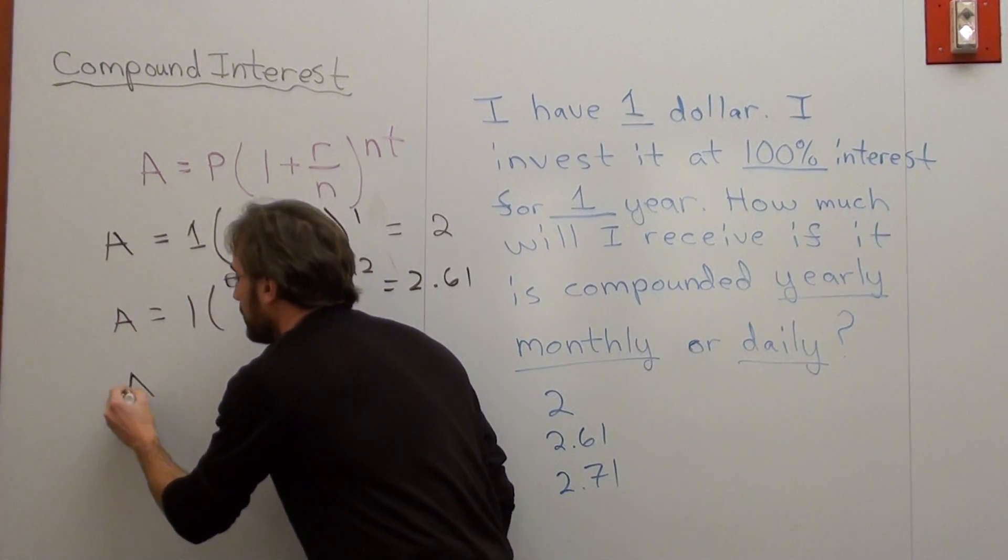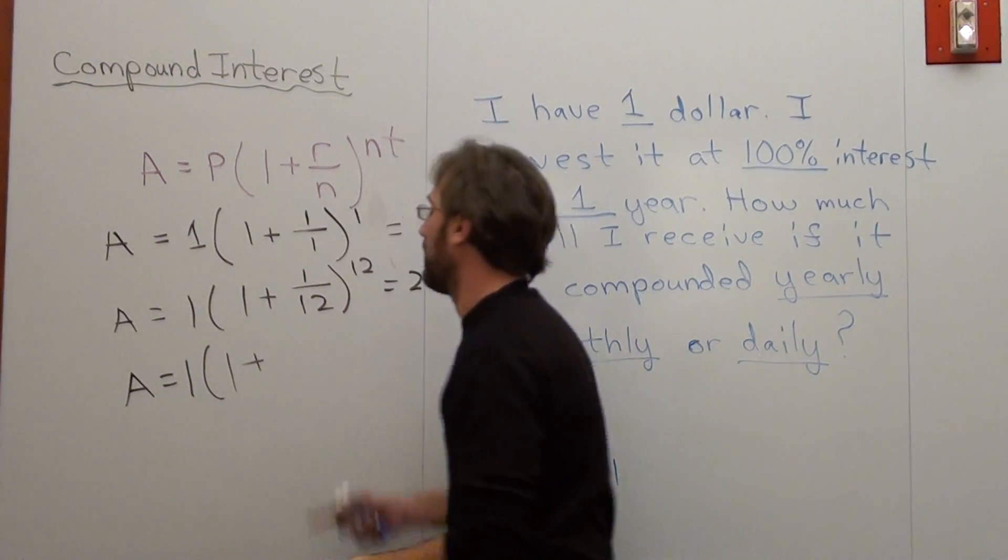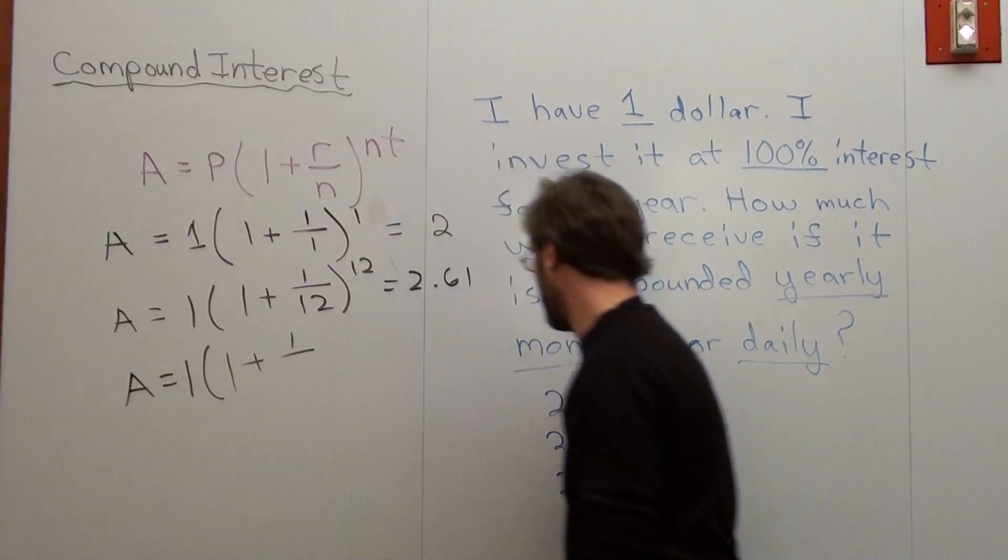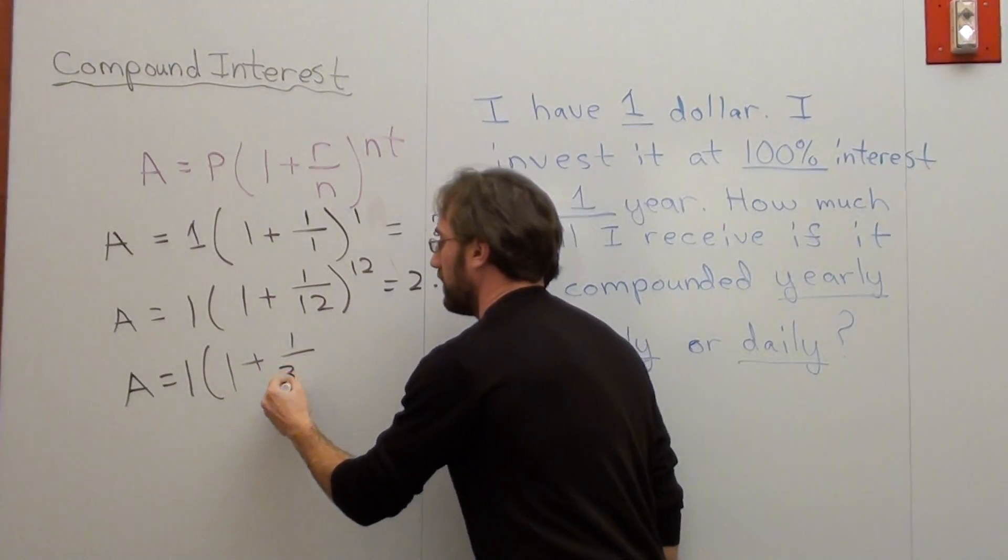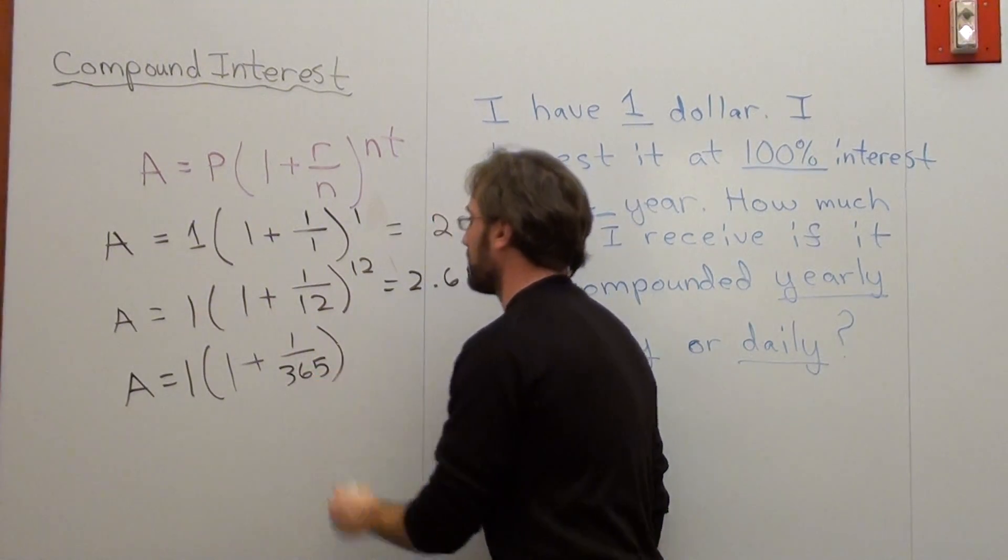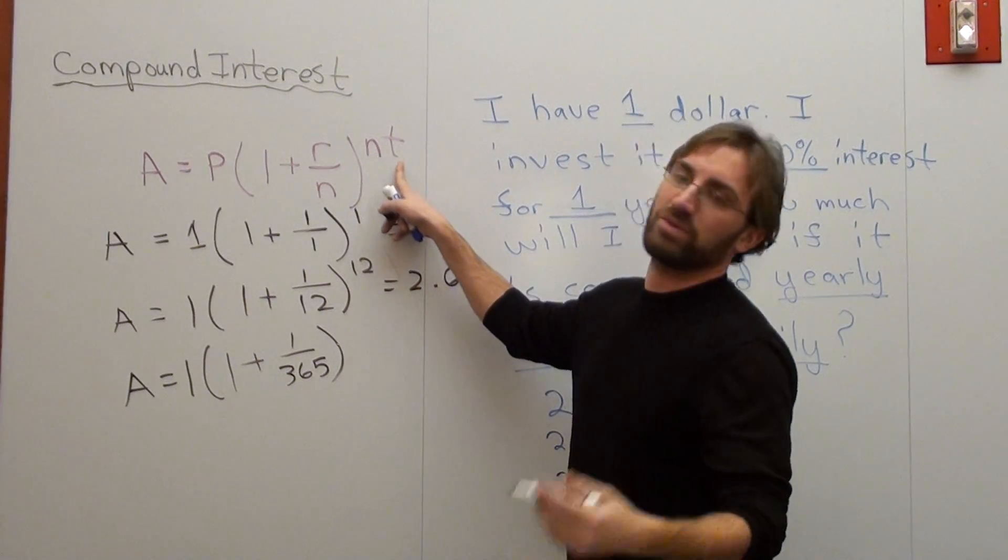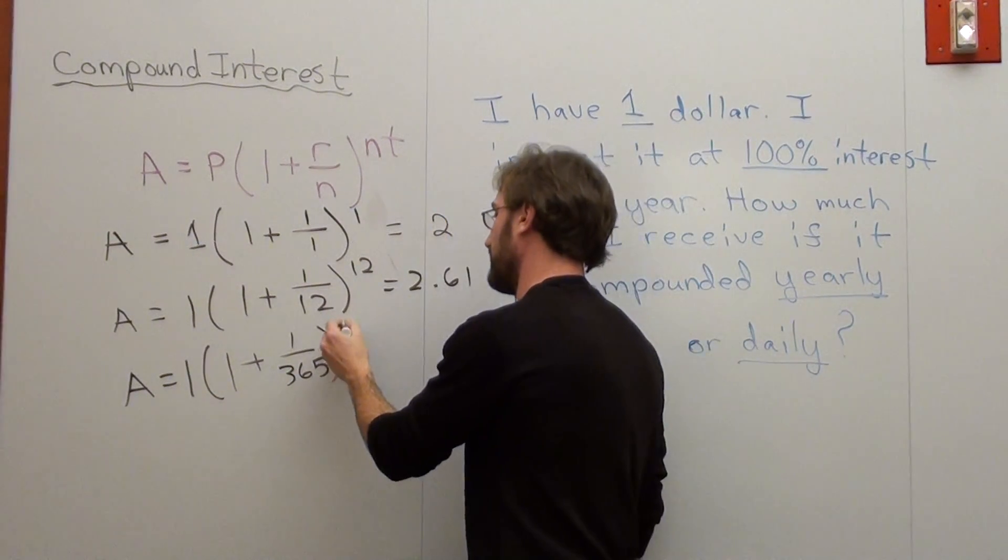And this one, it's $1, 1 plus. My rate is 1 divided by. Now, if it happens daily, there's 365 days in a year. Close parenthesis. And it's 365 times 1. Because I'm doing it for a year. It's still 365.